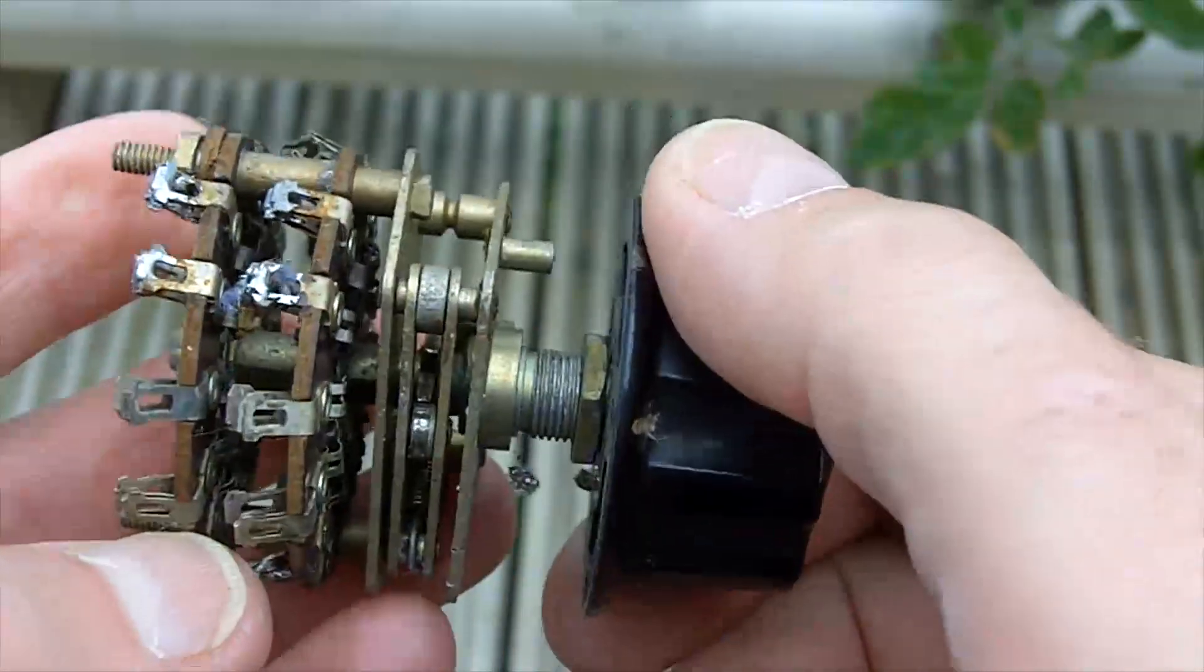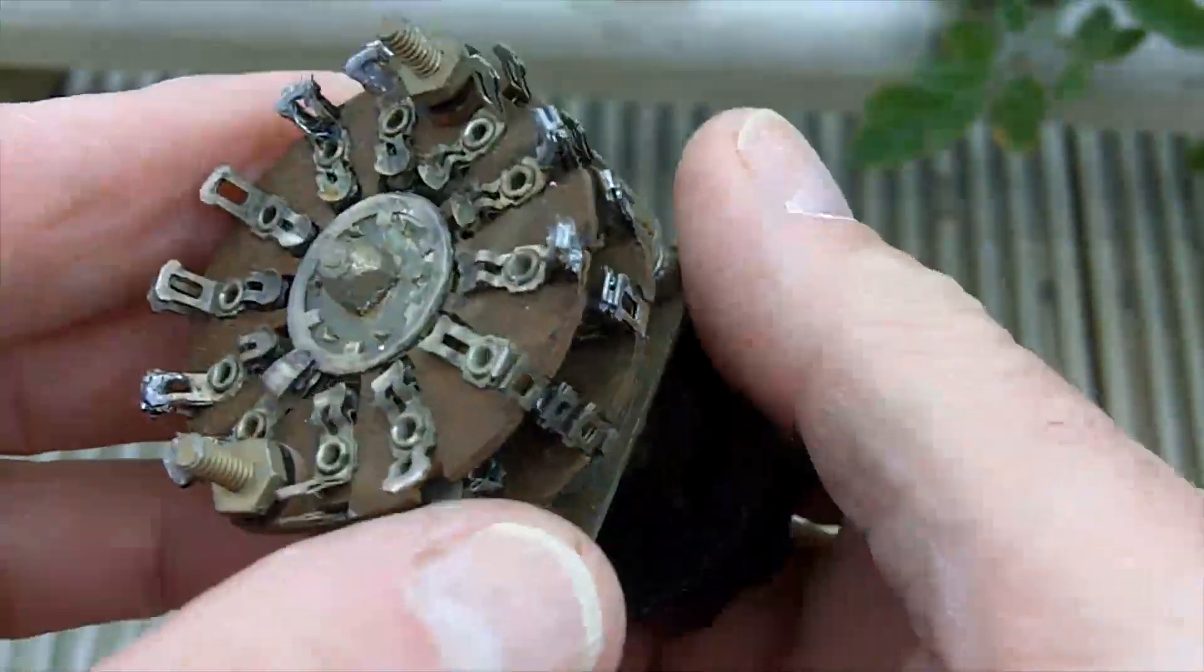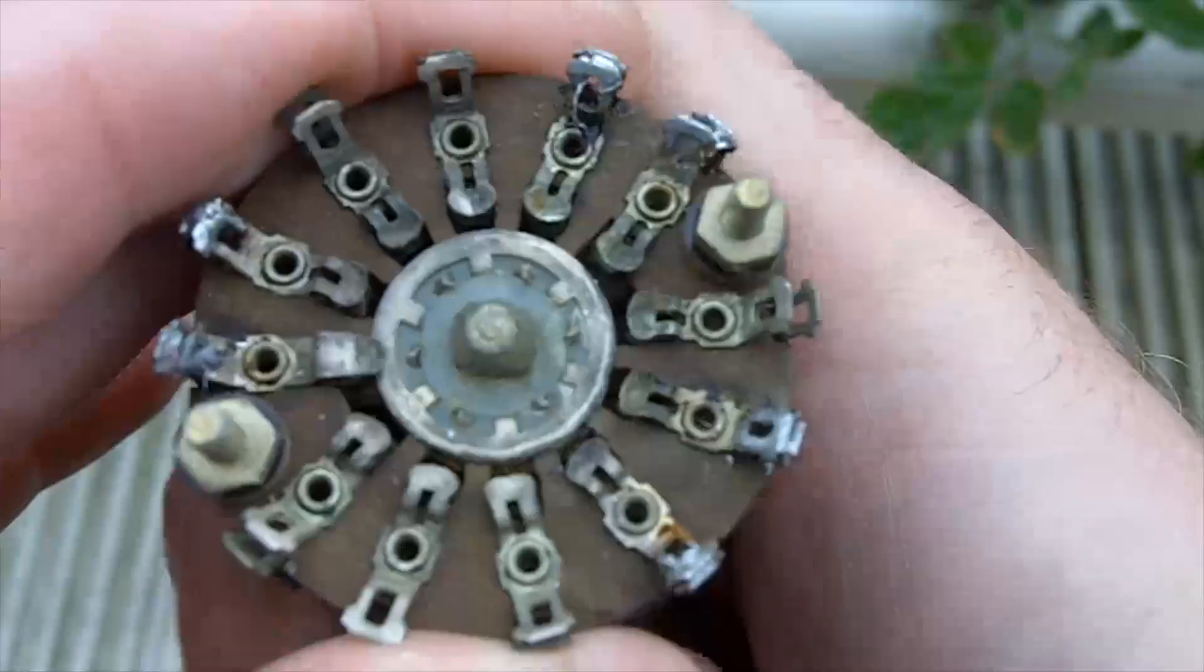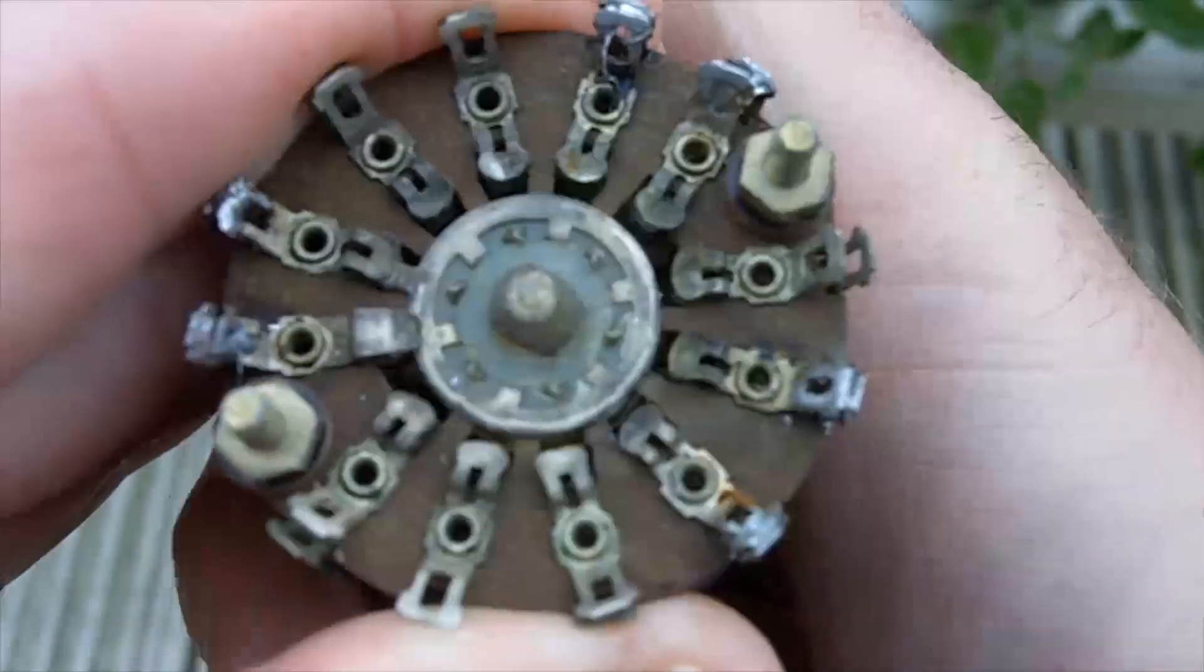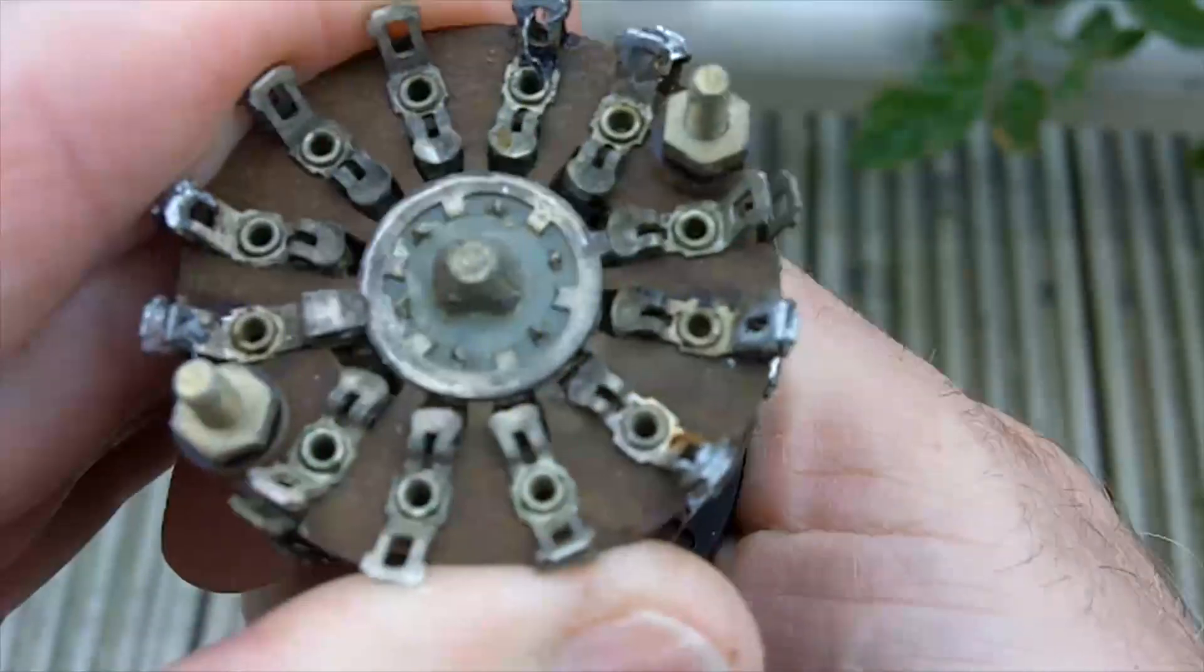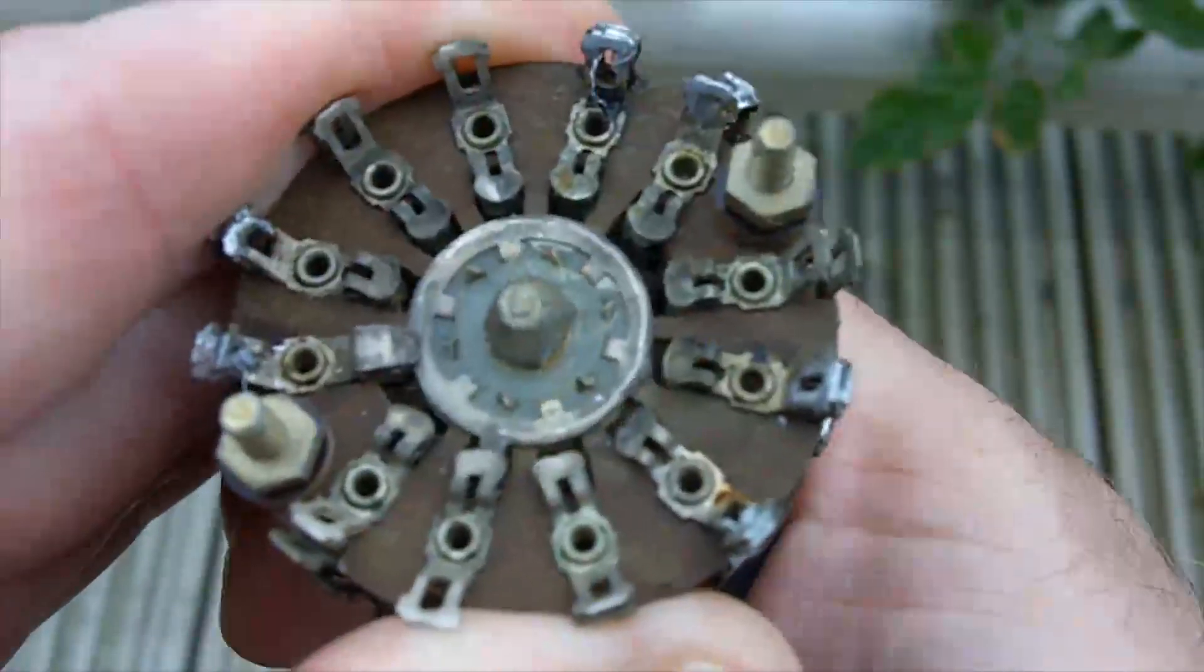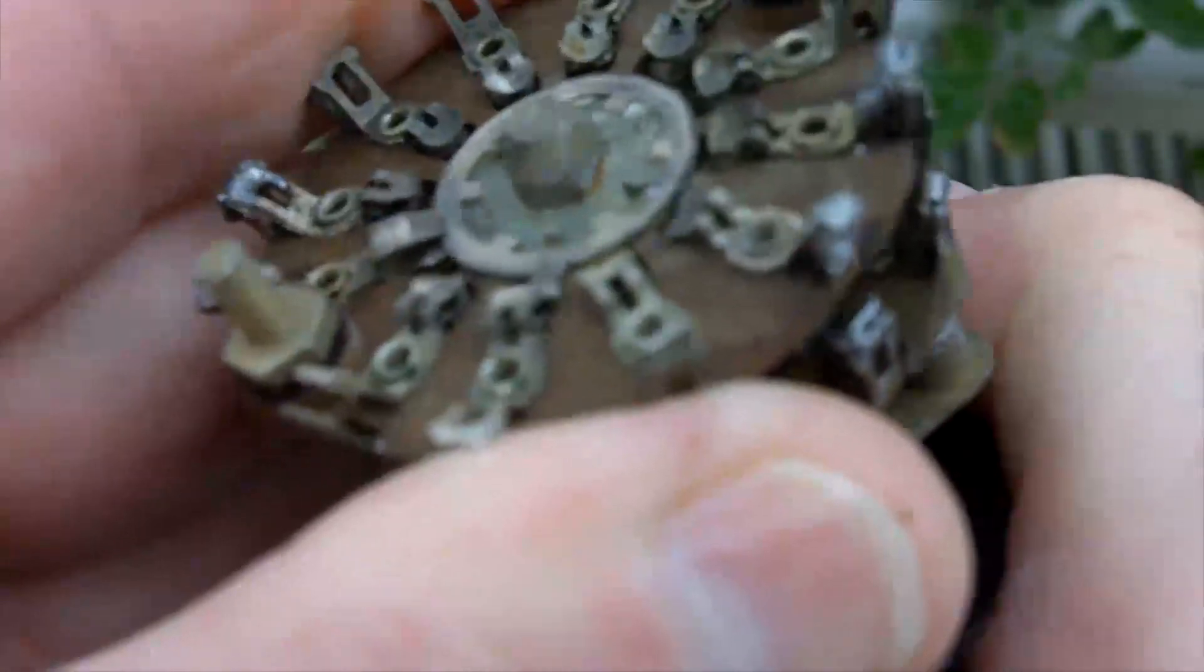This is another wafer switch I've got to show you. It's two wafers each one has 12 contacts, so that's a common position and 11 selectable positions. So that makes this a double pole 11-way switch.